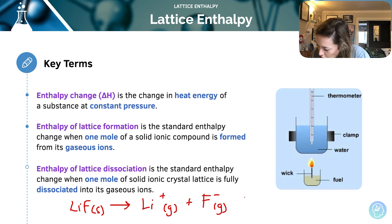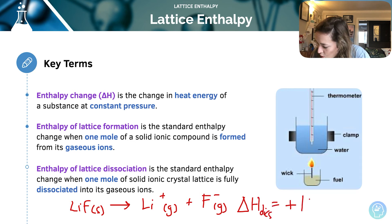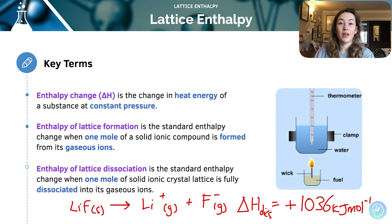You've effectively got the opposite thing happening, so the enthalpy of lattice dissociation is plus 1036 kilojoules per mole — get in the habit of always writing those units. The magnitude of lattice formation and lattice dissociation values is always the same. The only difference is that lattice dissociation is always positive, meaning it's endothermic, while lattice formation is always negative because it's an exothermic change.